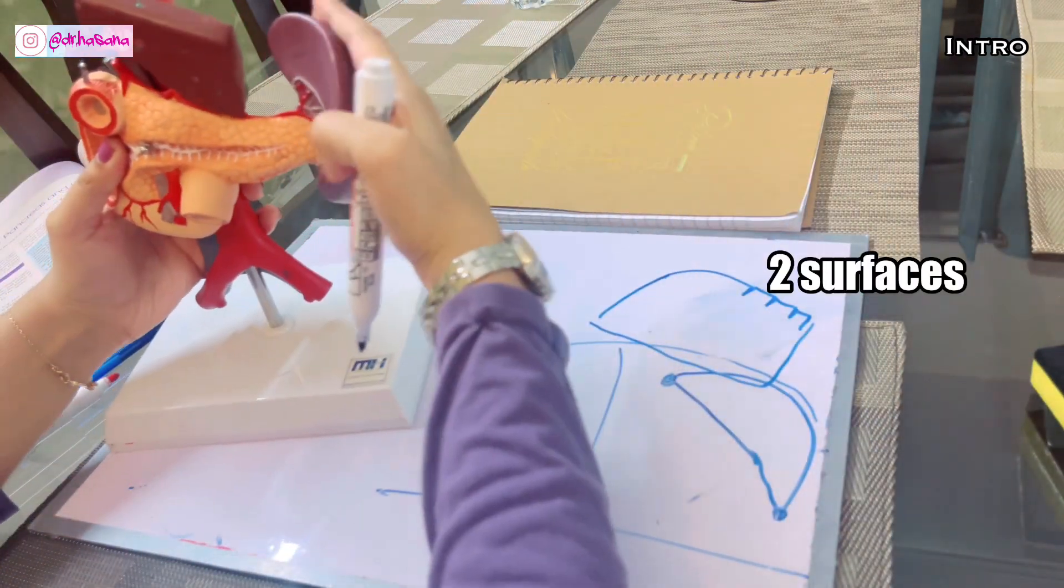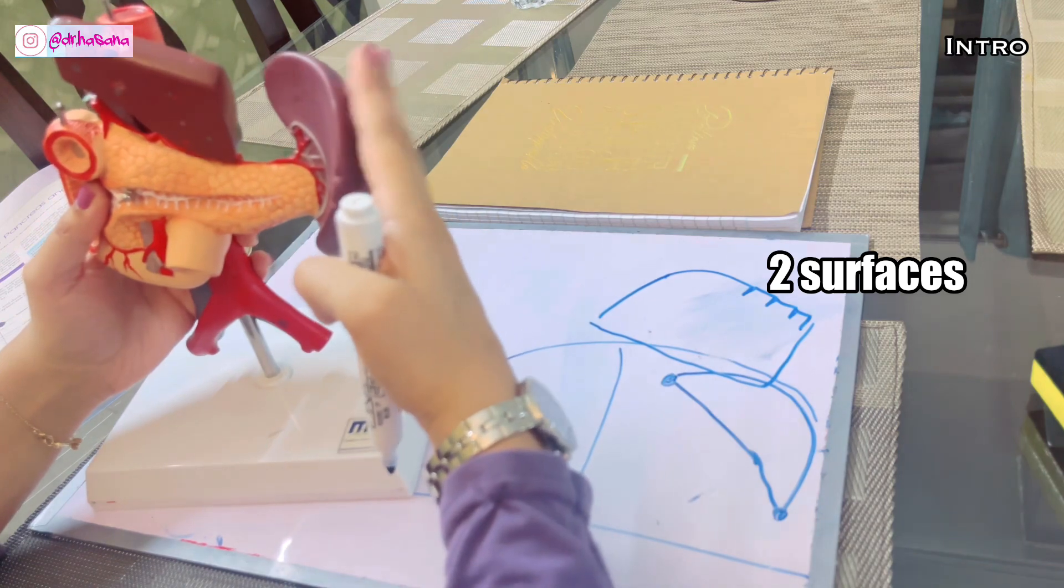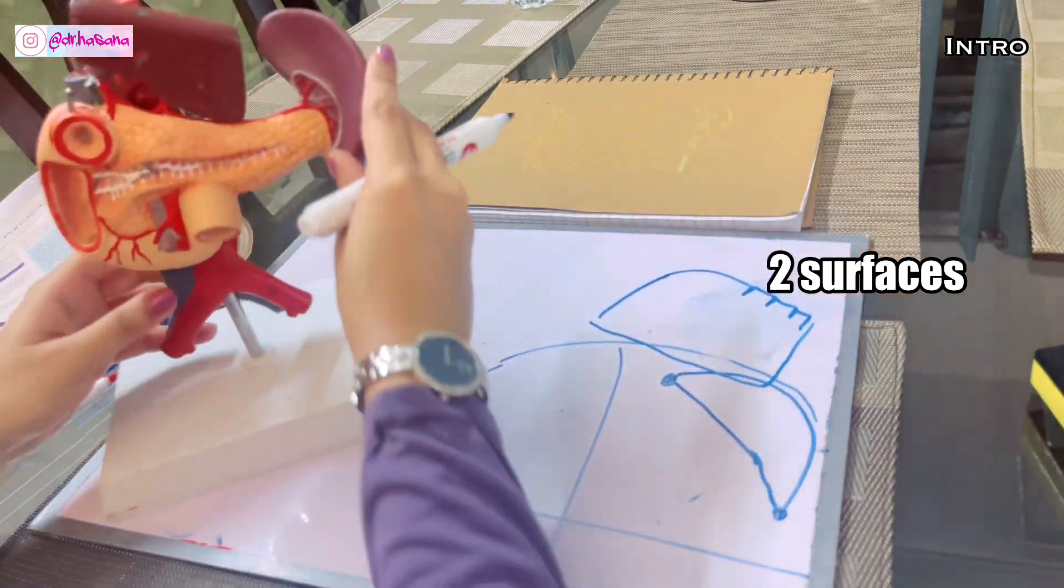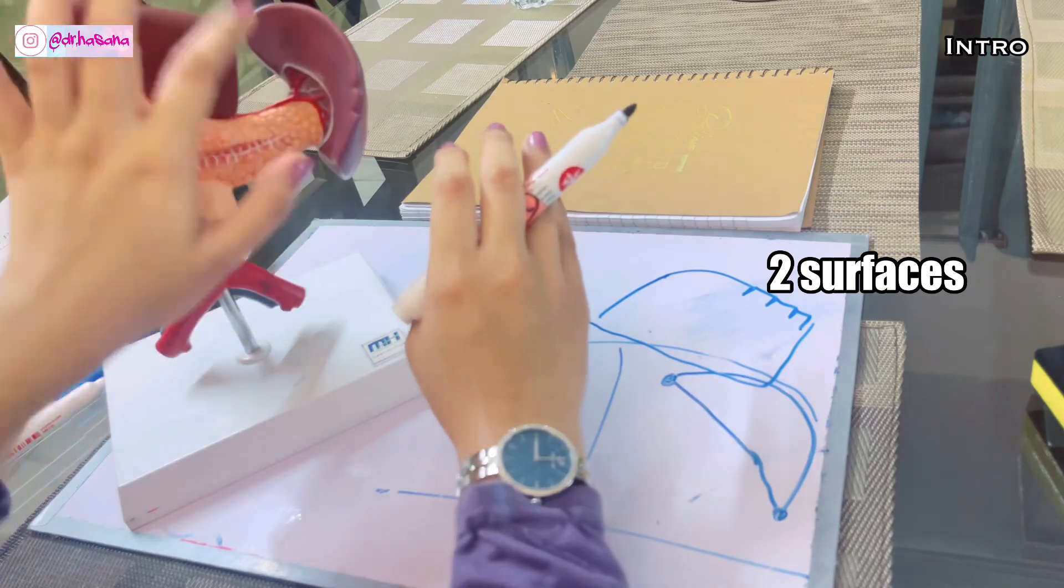We have two surfaces. One on this left side is known as the diaphragmatic surface because it comes in relation to the diaphragm. And this is the visceral surface which will be in relation to the viscera.